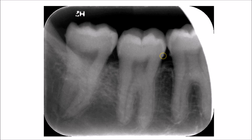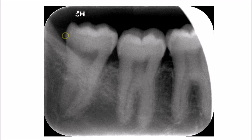Pitting and irregularities in the crestal bone at the interproximal area are an indication of an actively ongoing process of periodontal disease. This usually goes hand in hand with other predisposing factors like caries, open contacts, or any condition that favors the retention of food, accompanied by neglect of oral hygiene.